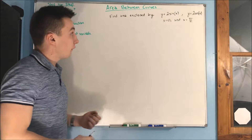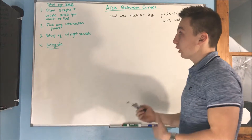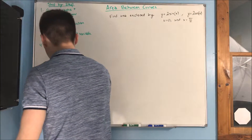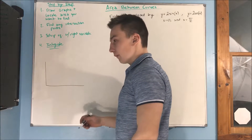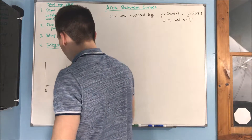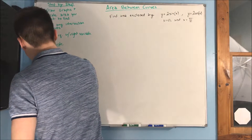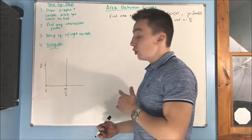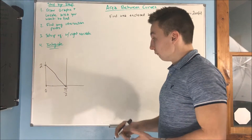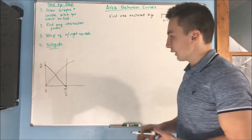The first step in finding the area between the curves, we need to draw the graphs and be able to locate the area that we want to find. So let's do a drawing. We have x equals 0 and x equals pi over 2, and we have our two graphs of 2 sine of x and 2 cosine of x. 2 cosine of x is going to go right through pi over 2, and 2 sine of x is going to come up — it peaks out at 2 and then curves back.